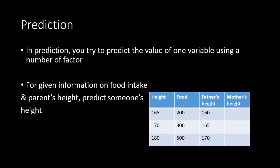On the other hand sometimes you may not be interested in finding out a relationship between different variables. You probably would like to predict something. Given information on food intake and parents' height you want to predict somebody's height. That kind of problem falls under the category of prediction.